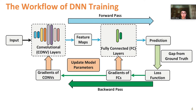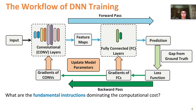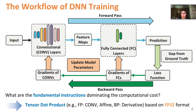Here is the workflow of a typical training procedure. Each iteration contains forward and backward passes. The fundamental computational cost comes from the convolutional operations and gradient calculation. These operations can be resolved as a series of tensor dot-products based on 32-bit floating-point numbers.